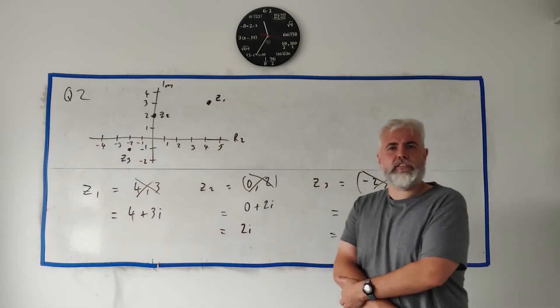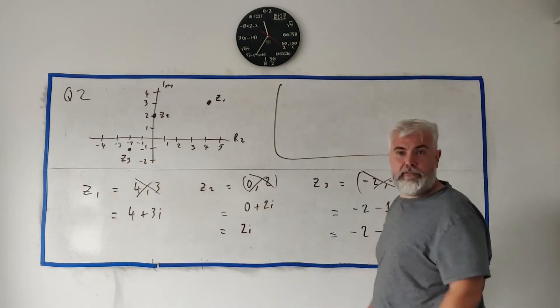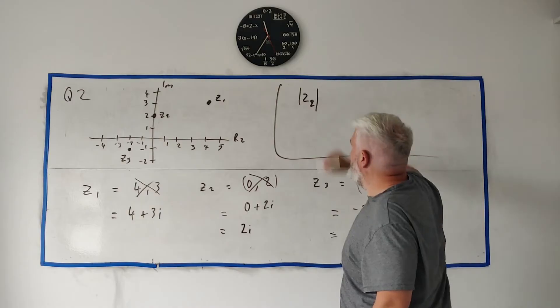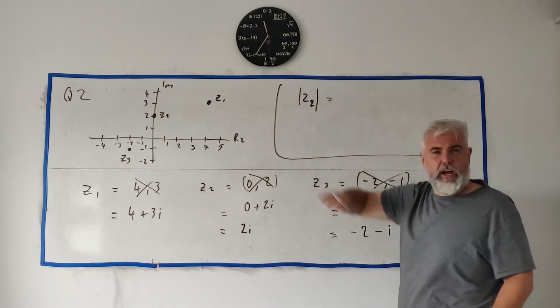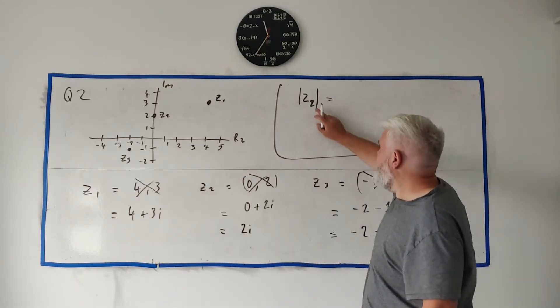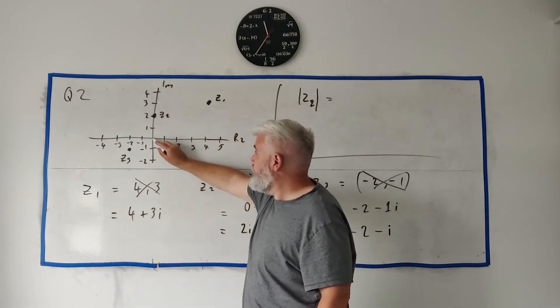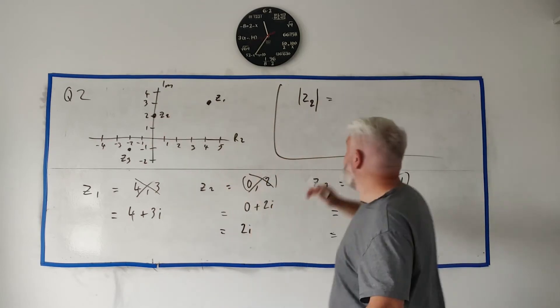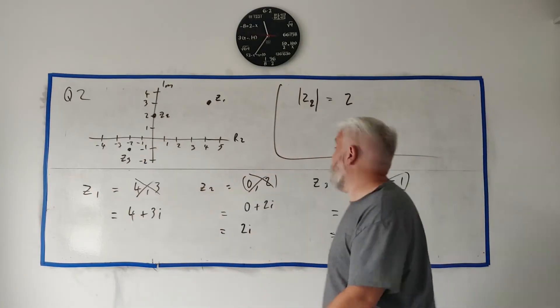So that's part A1. Part A2 then asks you to write down the value of, let's do it up here, the value of Z2, the modulus value of Z2. So what does that mean? The clue here is these two lines, they look the same as the distance when we write distance. So they're asking for the distance of Z2 from what? From 0. From the 0 point. So how far from here to here? That's all the answer. So you can just write 2 as the answer. It's quite straightforward to see that.